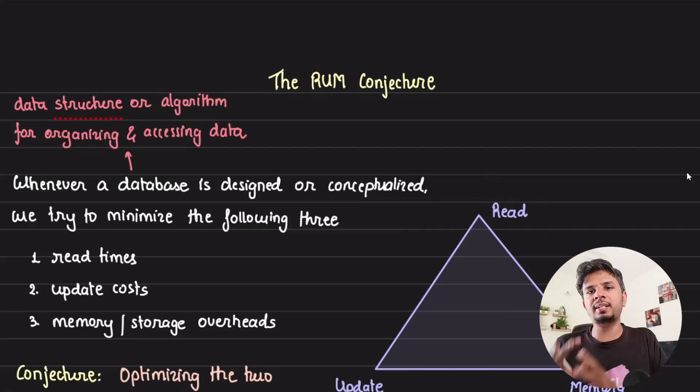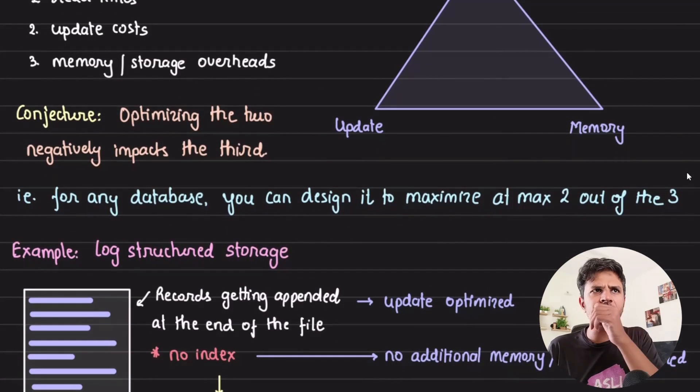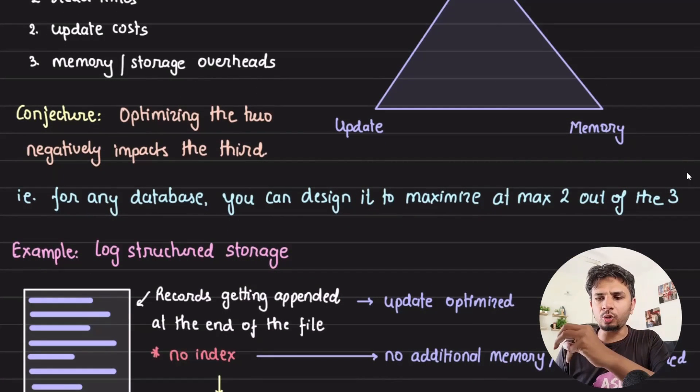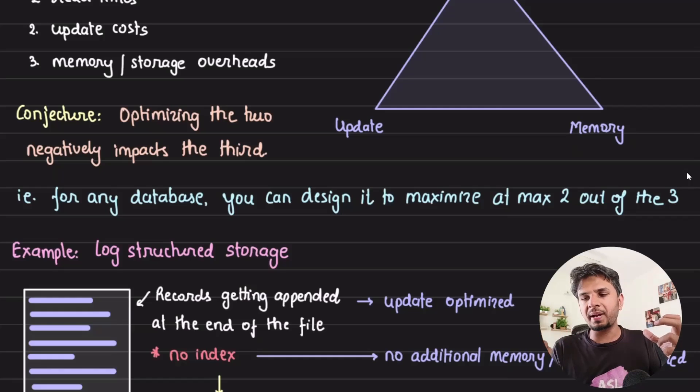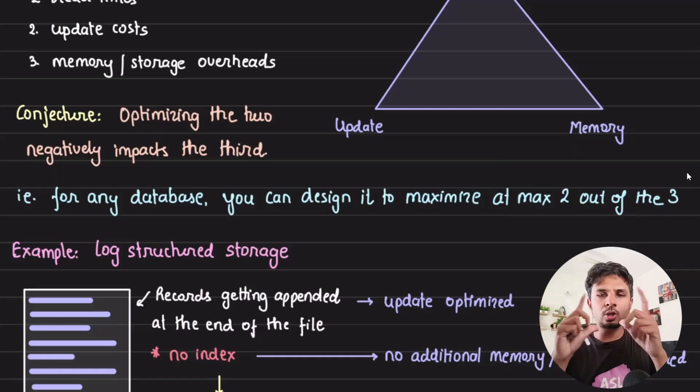The conjecture says that when we try to optimize two out of these three, the third one is impacted negatively. If we're trying to build a system optimized for read and write, we'd have to take a hit on storage or memory consumption. If we're trying to optimize on read and memory, then write would need to take a hit. In no way could we get all three.